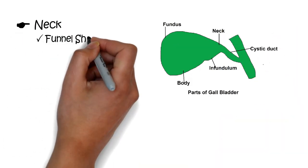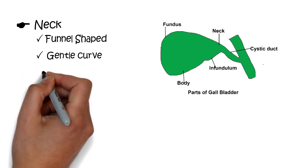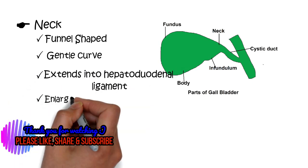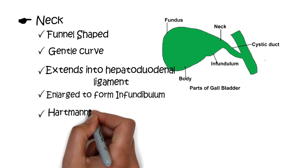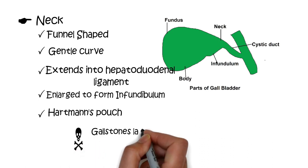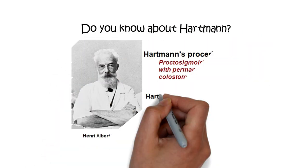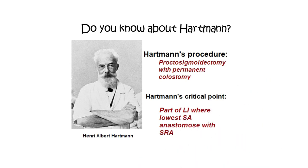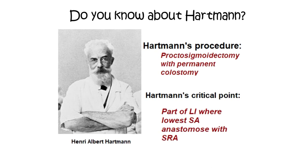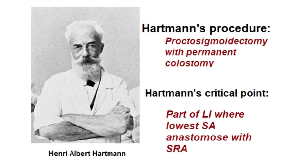The neck of the gallbladder is a funnel-shaped area that connects to the cystic duct, usually following a gentle curve. It lies in the deepest part of the gallbladder fossa and extends into the free portion of the hepatoduodenal ligament. The convexity of the neck may enlarge to form the infundibulum or Hartmann's pouch, posteromedially. The significance of Hartmann's pouch is that a gallbladder stone may lodge there, causing acute cholecystitis. Henry Albert Hartmann was a French surgeon; Hartmann's procedure is proctosigmoidectomy with end colostomy for carcinoma of the colon, and Hartmann's critical point is the site on the large intestine where the lowest sigmoid artery anastomoses with the superior rectal artery.